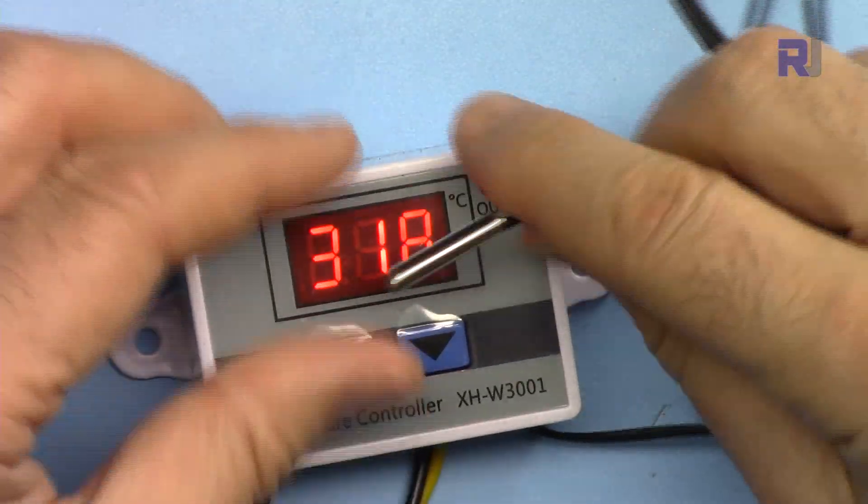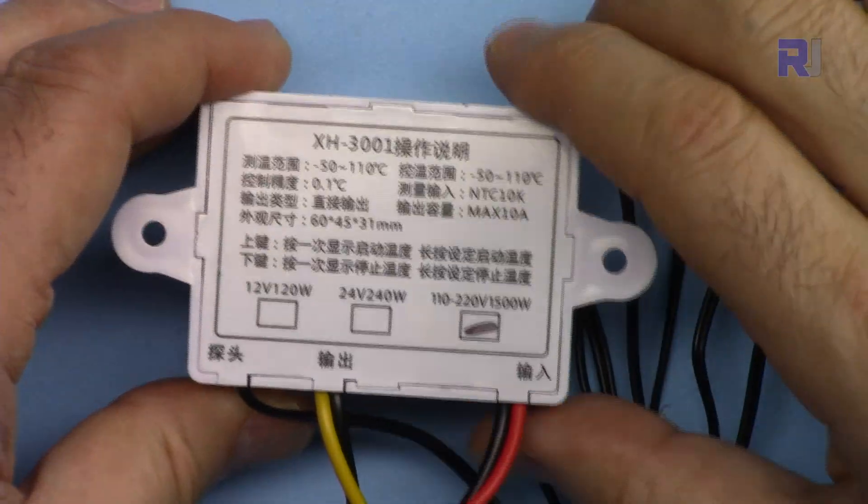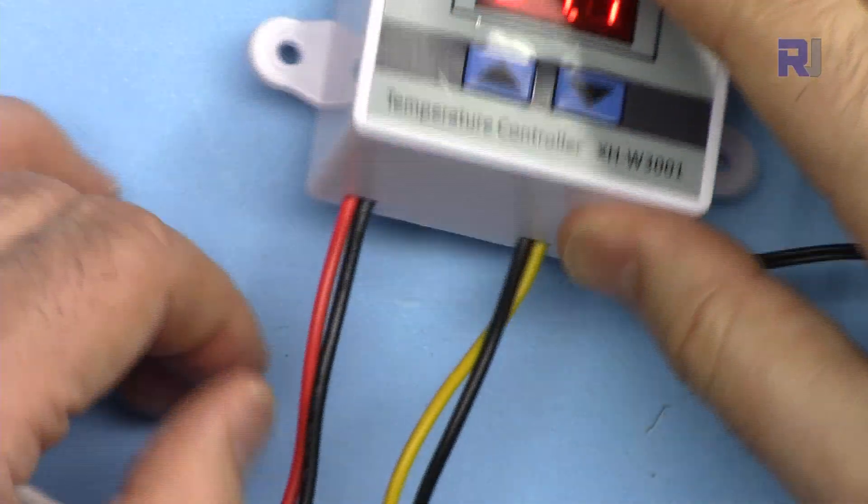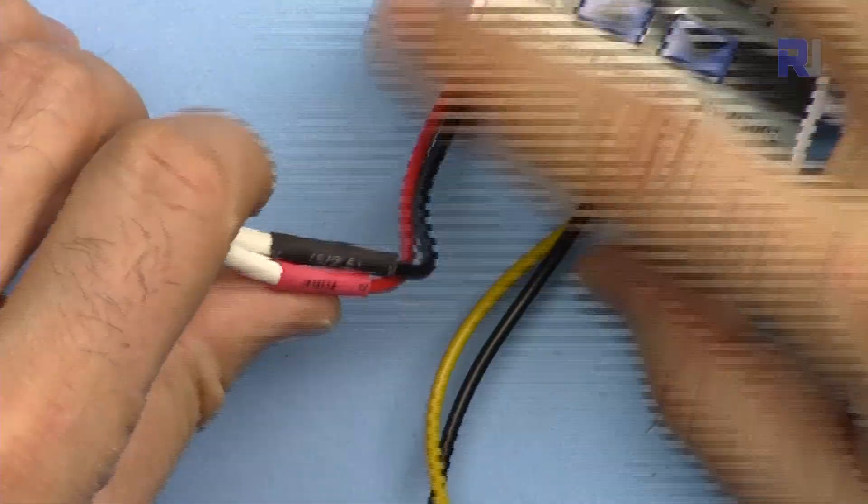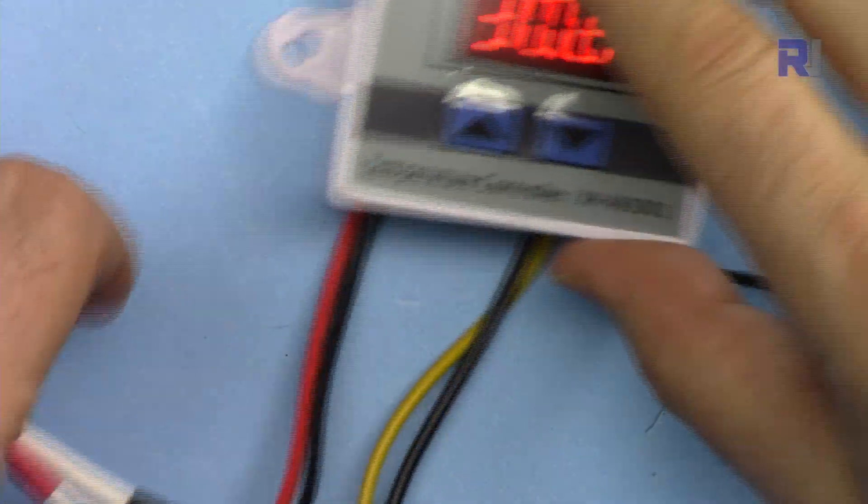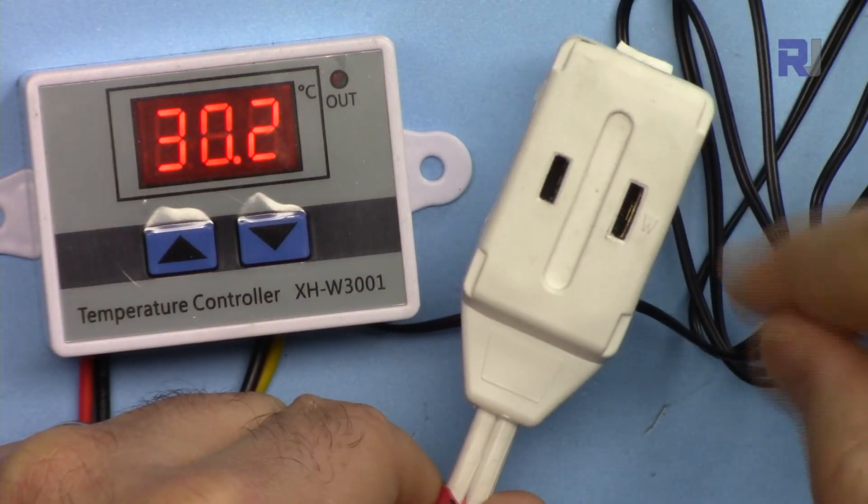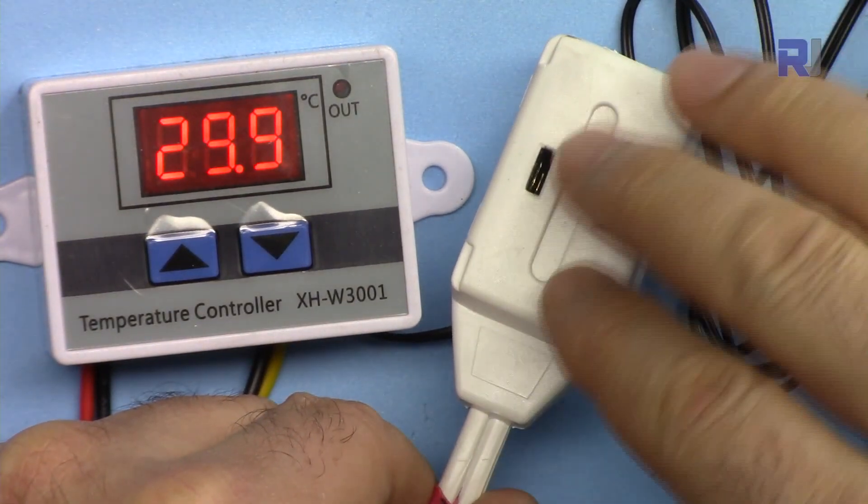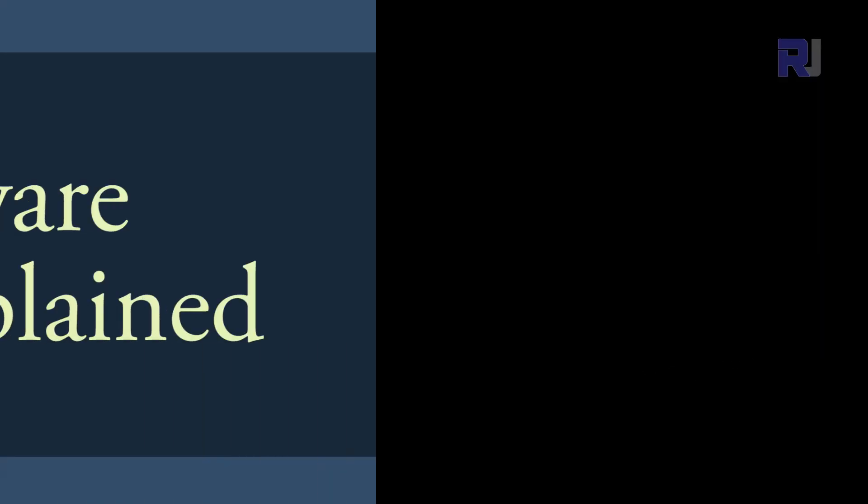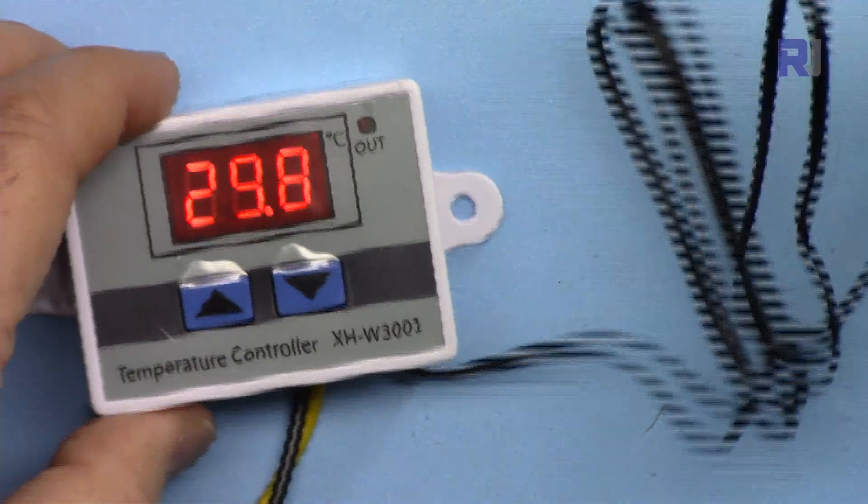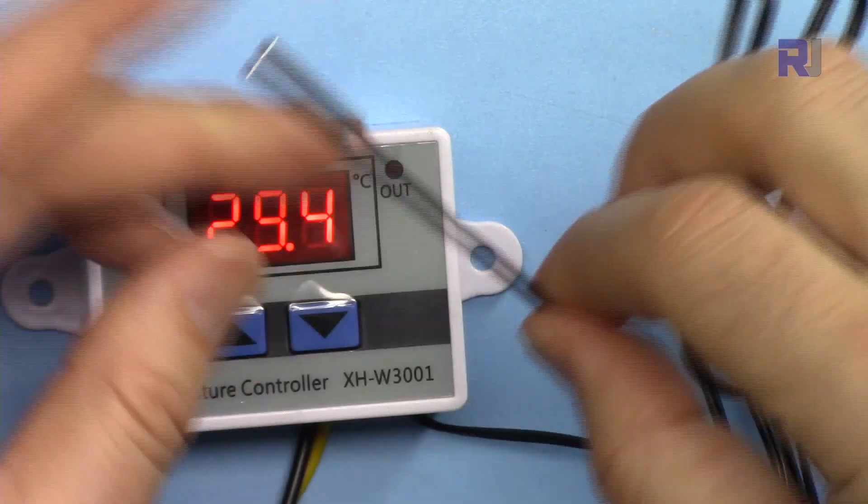The maximum it can handle is 10 ampere for the AC load, and this will be connected to the AC which I've already connected. This goes directly to the wall outlet and this is the output where I can connect my load - either heater, refrigerator, fan, whatever device you have. And this can be immersed directly inside the liquid or just on air.